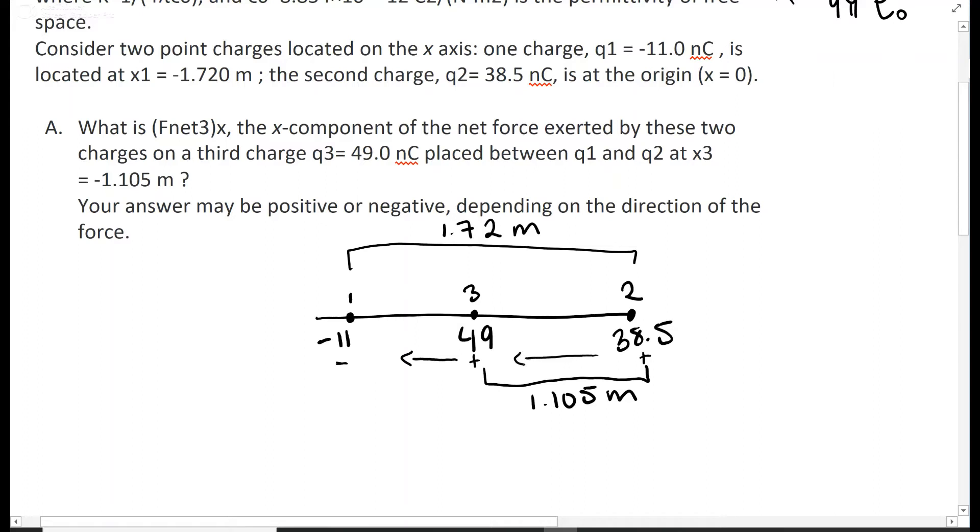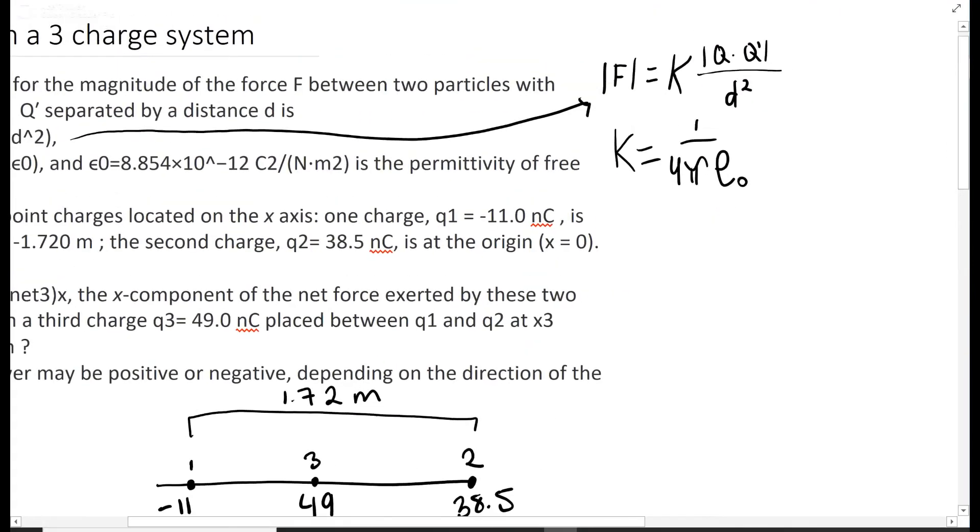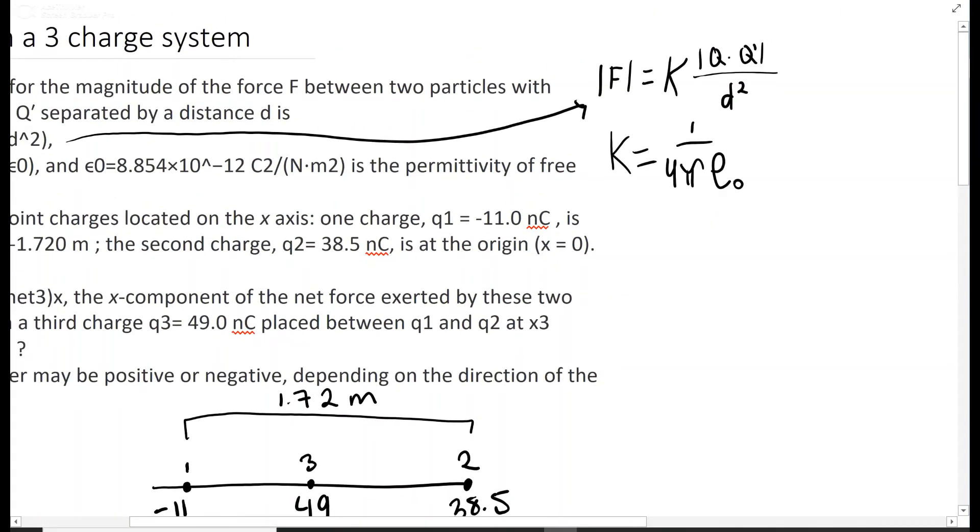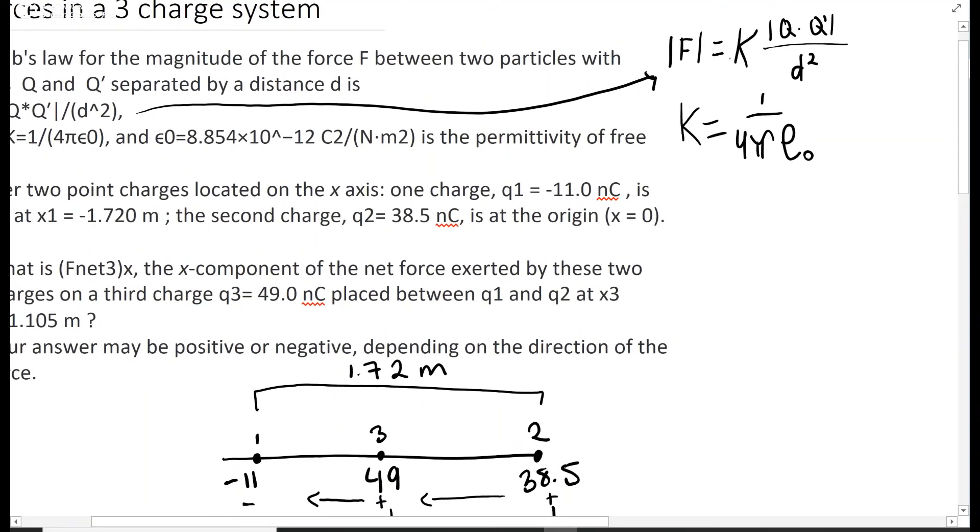Now we're going to use Coulomb's law: F equals k q q over d squared. We're going to have two individual forces - one for the interaction of 1 and 3, one for the interaction of 2 and 3 - and then those are going to be added together.